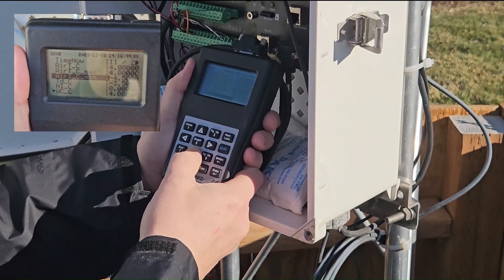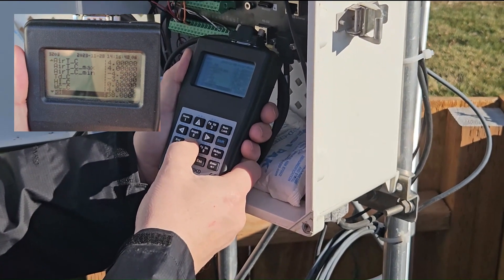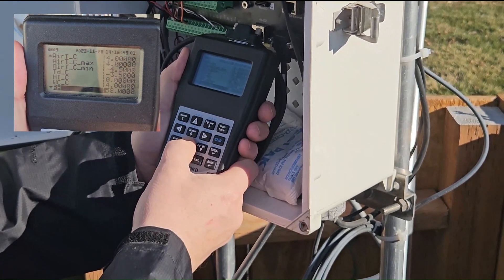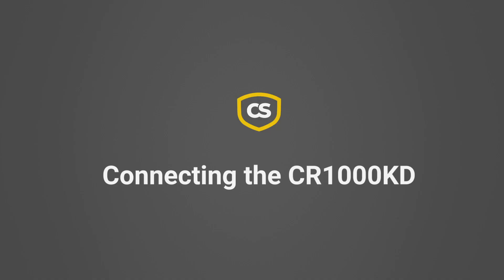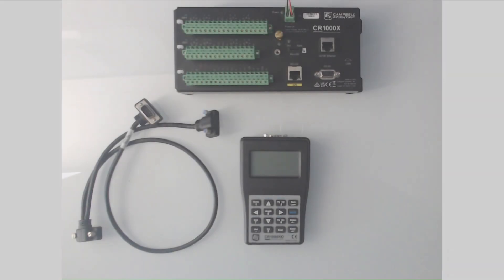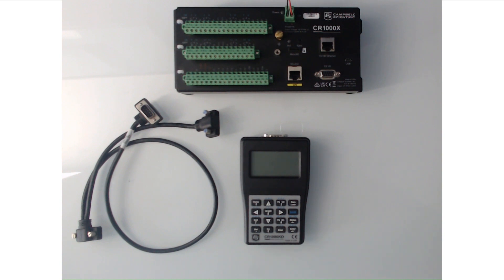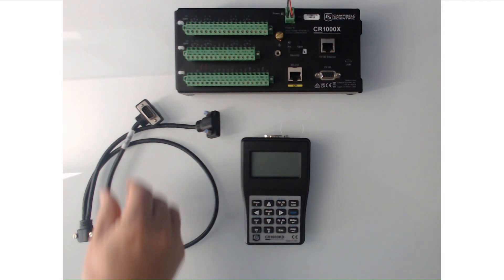In this video, we will connect the CR1000KD and learn about its navigation keys. The CR1000KD is powered by and communicates with the data logger through the logger CSIO port. The connection is made using the SC12 two-peripheral connector cable that shipped with the CR1000KD display.